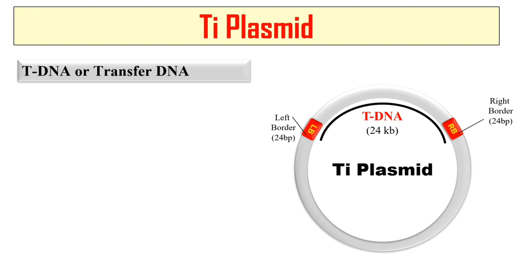The DNA between the left border and right border sequences is called T-DNA — this is the DNA which is transferred to the plant cell. This T-DNA also contains certain genes responsible for causing cancer in plants, or causing crown gall disease. One of those genes is the aux gene, which synthesizes auxin, a plant hormone.